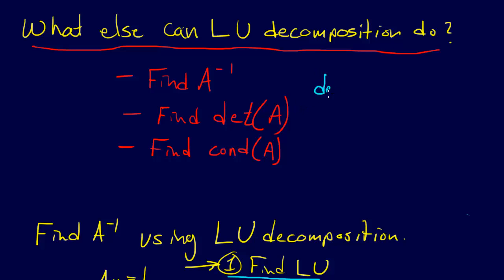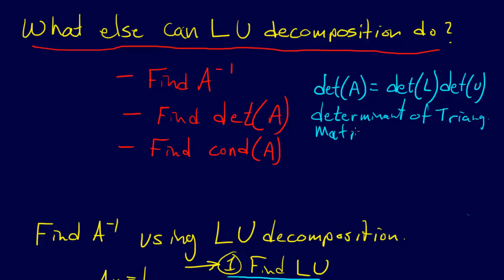To find the determinant of A, well, we just realize the determinant of A is equal to the determinant of L times the determinant of U. And another useful thing is the determinant of a triangular matrix is the product of the diagonal.